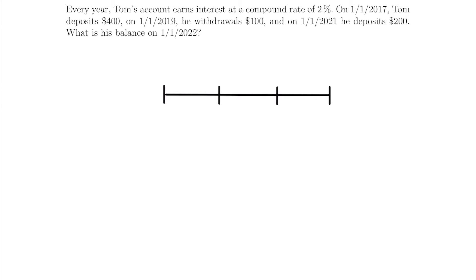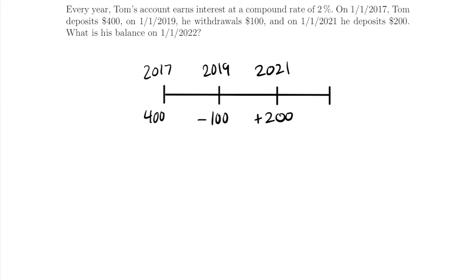Let's start at the very beginning of the timeline with the first thing Tom does. In 2017, he deposits $400, so we write 2017 and +$400. Then in 2019 he withdraws $100, so the next mark is 2019 with −$100. In 2021 he deposits $200, so we write +$200. Then we add 2022 with a question mark — that's the value we're looking for. We also know the interest rate: I = 2%, which is 0.02 as a decimal.